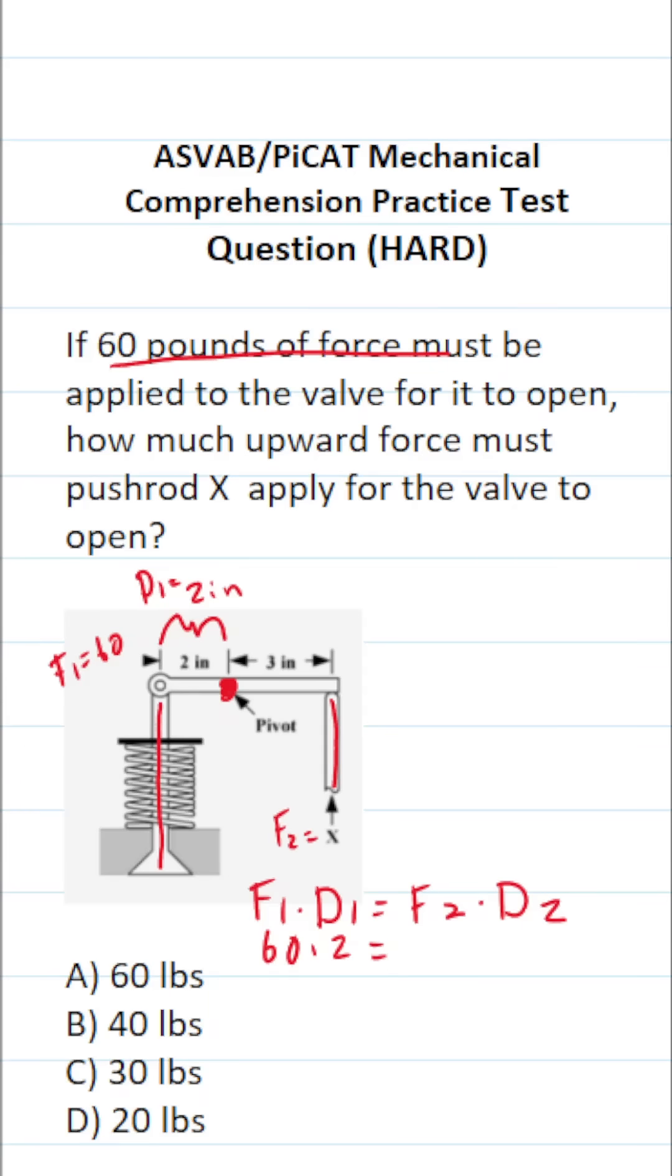And what is D2? D2 is the distance that that force is away from the pivot point or fulcrum. We can see D2 is going to be 3 inches, so this becomes X times 3.